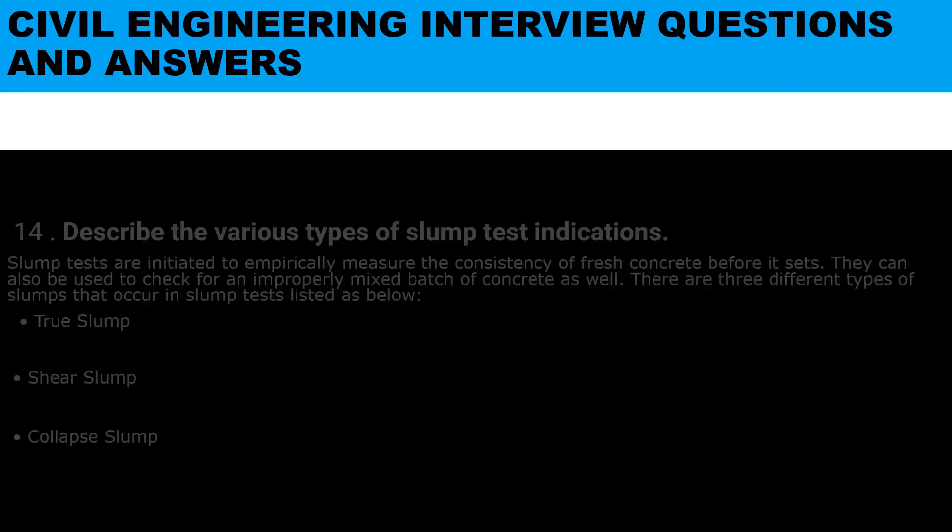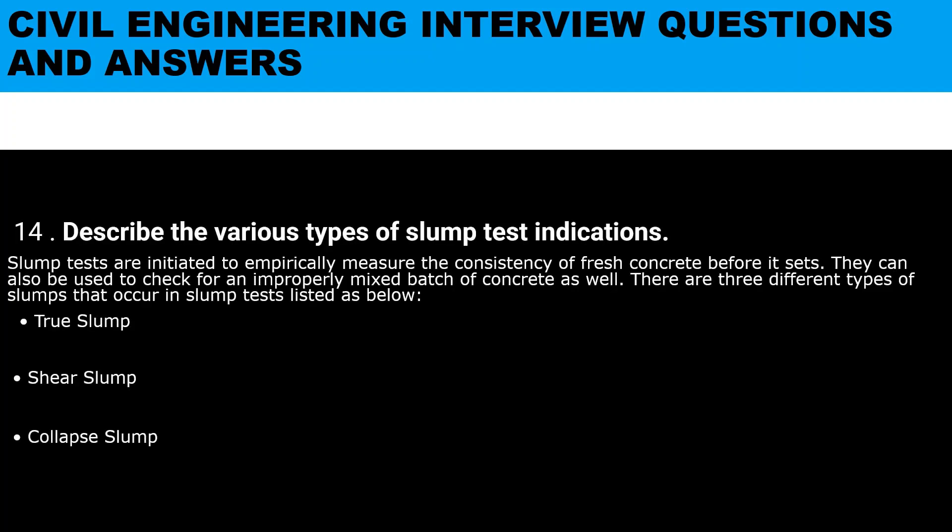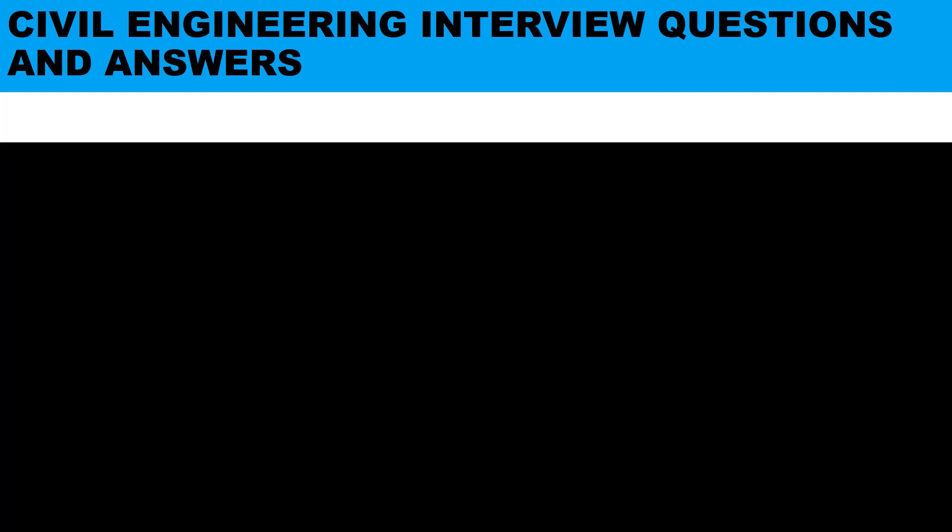Question fourteen: describe the various types of slump test indications. Slump tests are initiated to empirically measure the consistence of fresh concrete before it sets. They can also be used to check for an improperly mixed batch of concrete. There are three different types of slumps that occur in a slump test: the true slump, the shear slump, and the collapse slump.